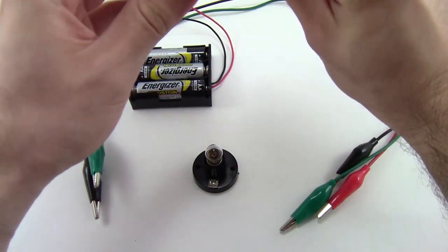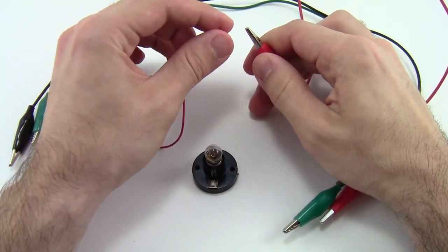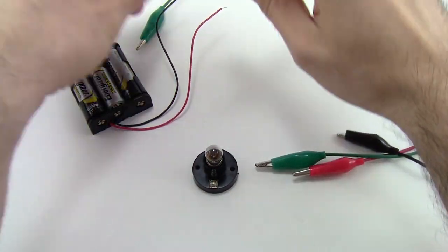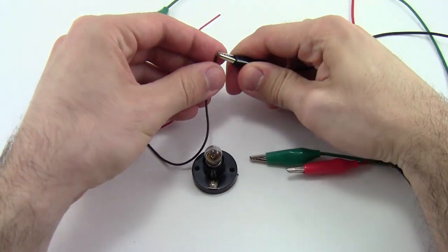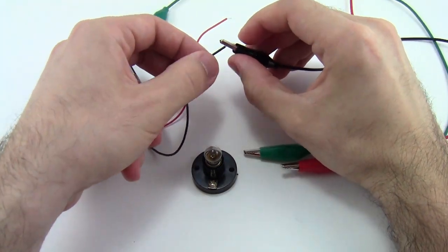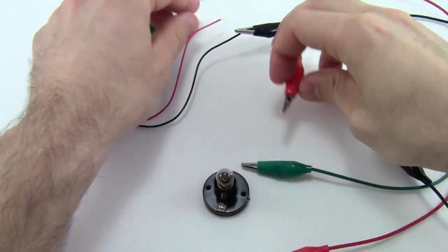So we're going to color code here. Take the red alligator clip and connect it to the red wire from the battery pack. Take the black alligator clip and connect it to the black wire. And you can see these alligator clips will hold on kind of snugly, but if you pull too hard, they will come off. So I lost the red one there. I'm going to reattach that.